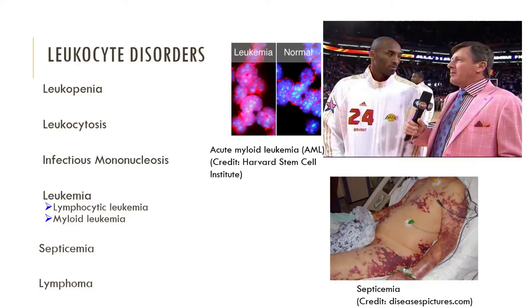Leukemia is a cancerous condition of white blood cells, named after the predominant cell type involved. Acute leukemia is a rapid-advancing cancer derived from lymphoblasts, also referred to as lymphoid, lymphatic, or lymphocytic leukemia. Chronic leukemia is a slow-advancing cancer derived from late stages of myeloblasts, also referred to as myeloid leukemia.